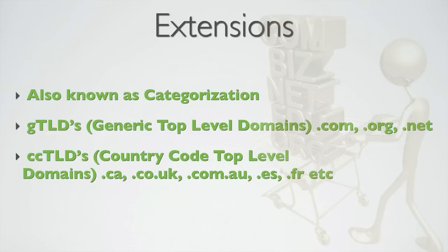Below these top level domains on the domain name system, also known as the DNS, are the second level and third level domain names. We're going to concentrate primarily on GTLDs — so .coms, .orgs, .nets, etc. — or CCTLDs if your niche is country specific.